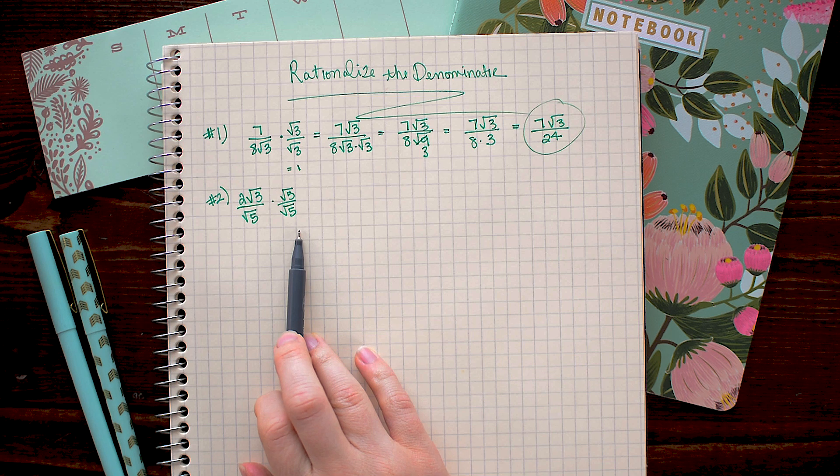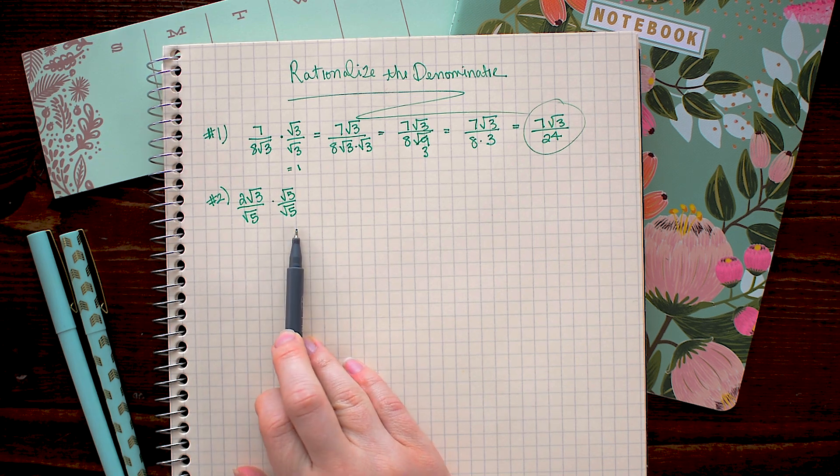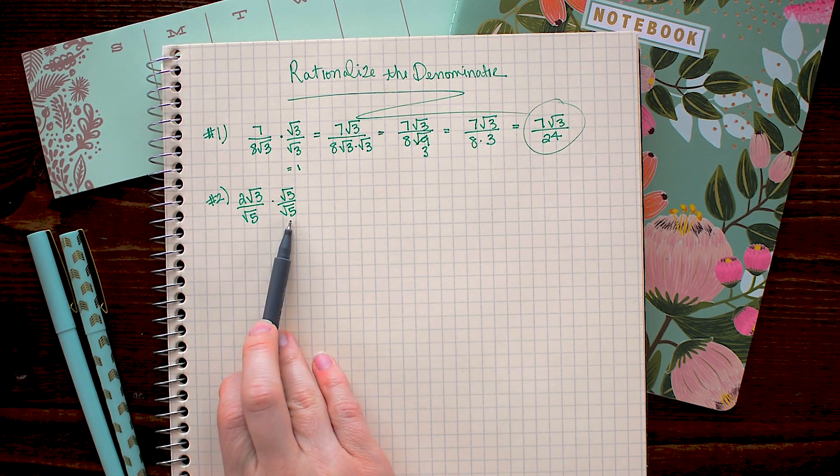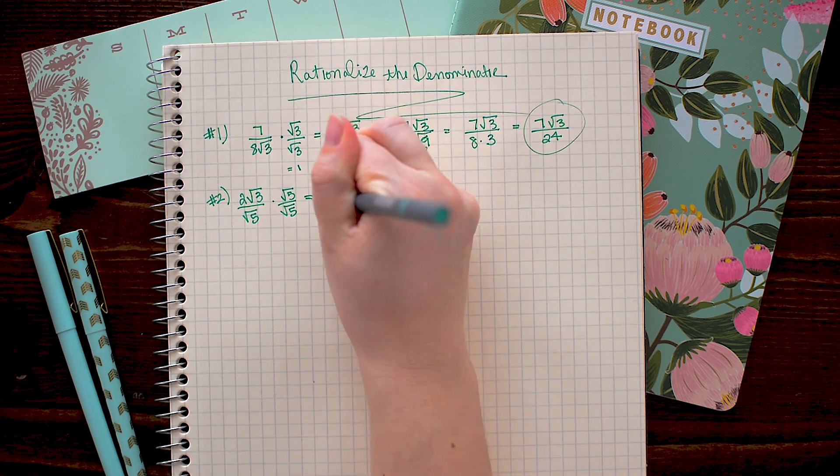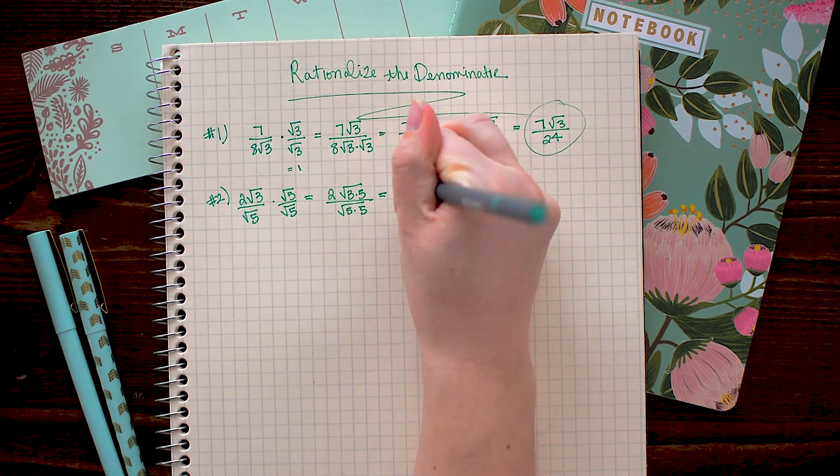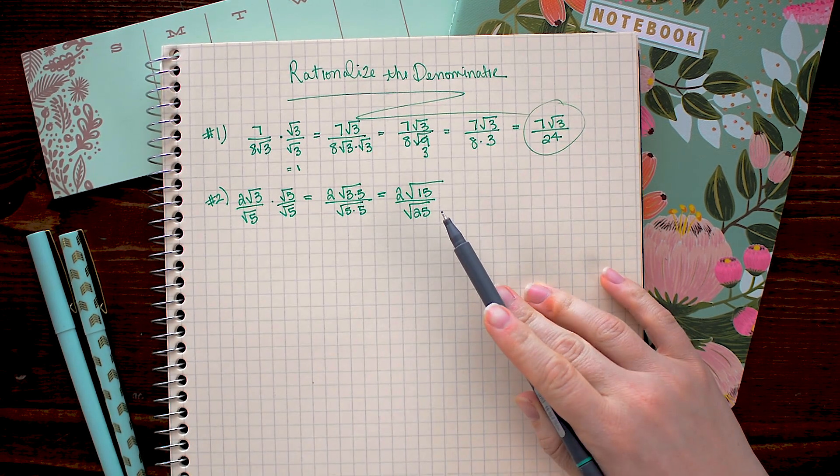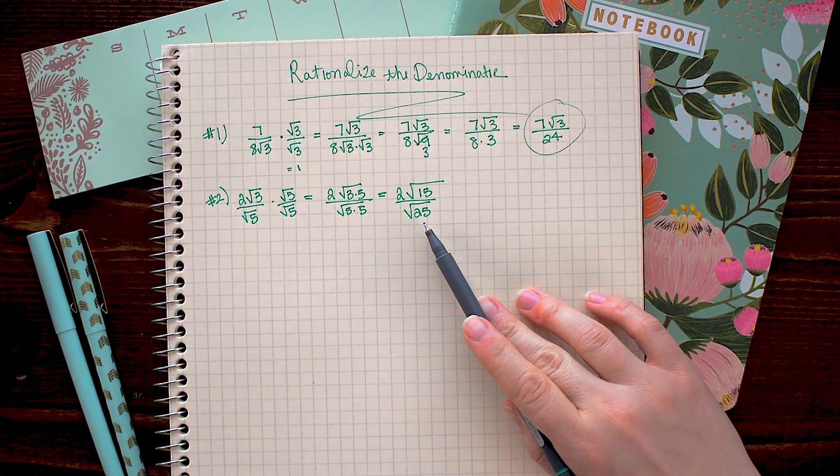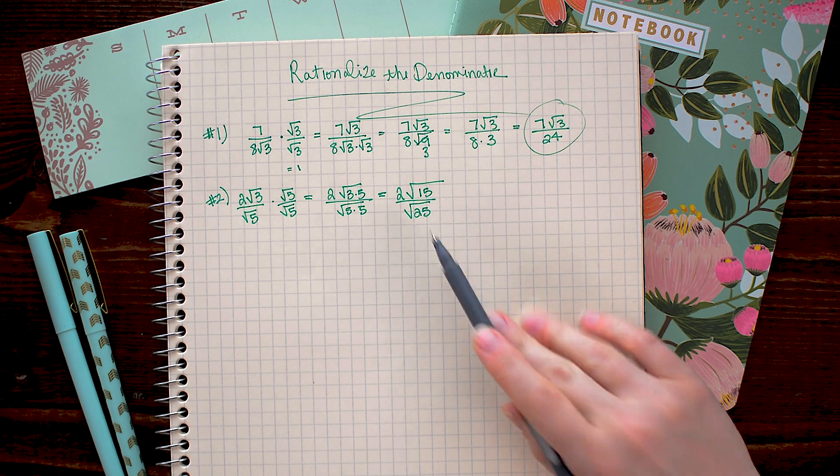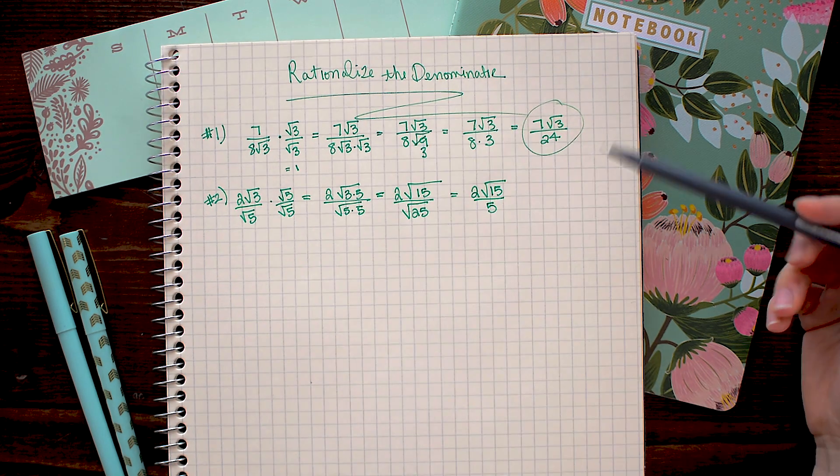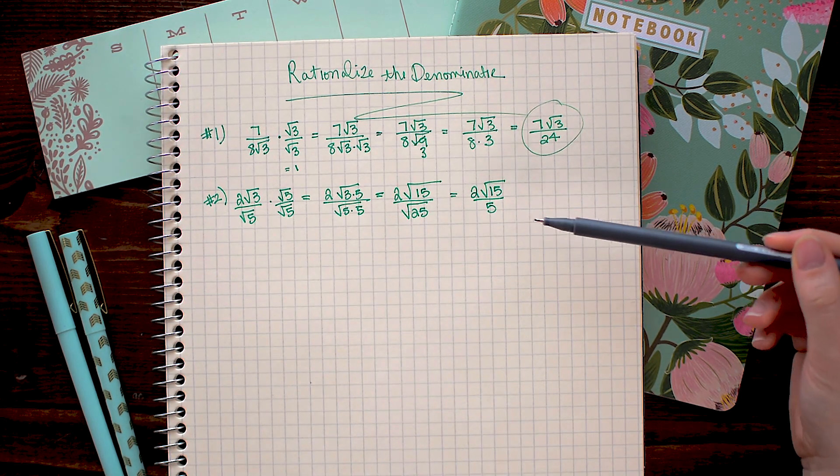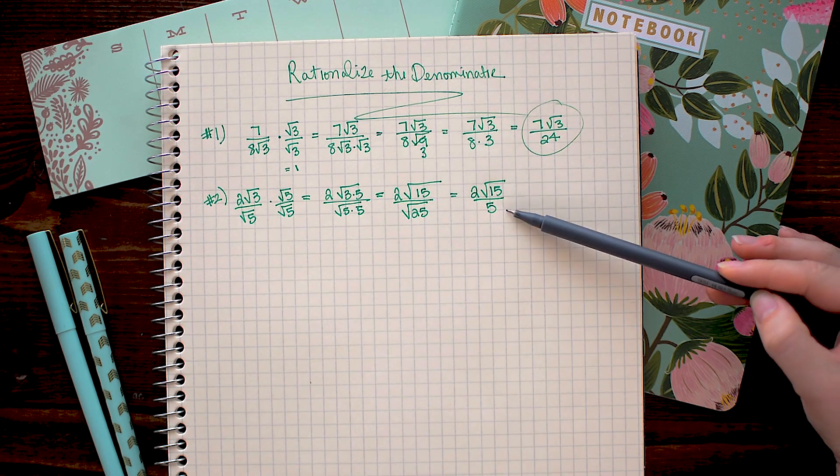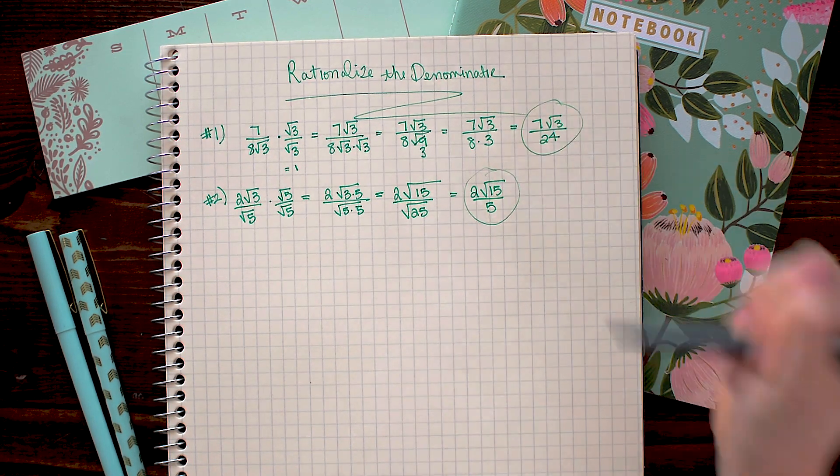Again, this is a form of 1, so it's a totally legal move. Multiplying the numerators and denominators together we get 2 square root 15 over square root 25. And we're almost there. All we need to do now is take the square root of 25, which is 5. We can't simplify any further, and we have succeeded at getting the radical out of the denominator. So that is our final answer.